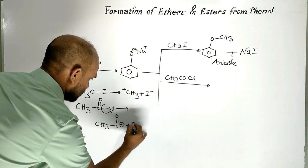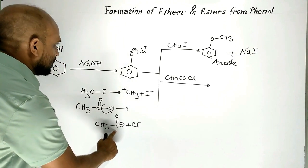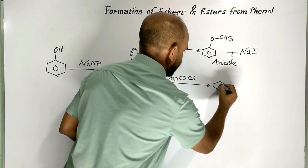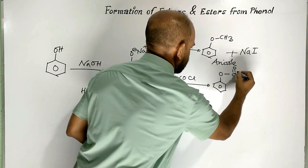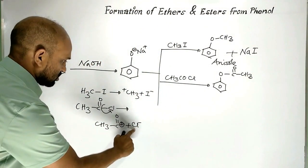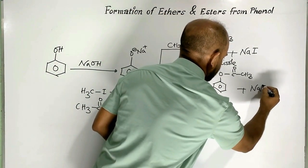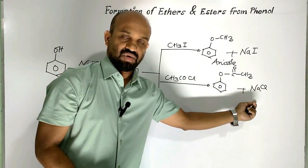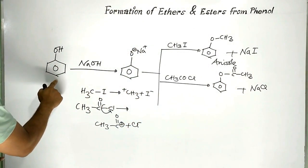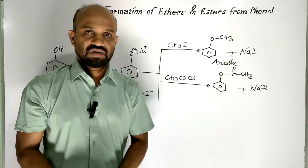A cation and a chloride ion are formed. This cation combines with oxygen to form a kind of ester. The chloride ion combines with the sodium ion to form sodium chloride as a byproduct. This ester is formed from phenol. Its name is phenyl acetate.